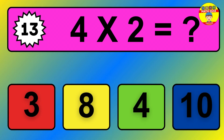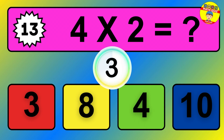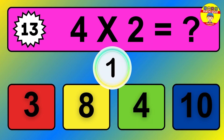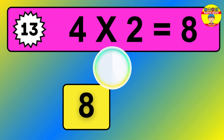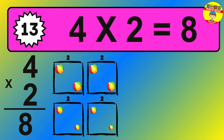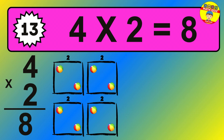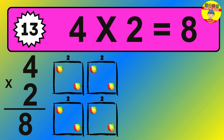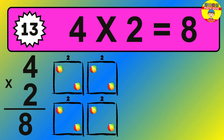Question 13. 4 times 2 equals what? The answer is 4 times 2 is 8. To calculate, we have 4 groups with 2 balls each one. So how many balls do we have? 8 balls.